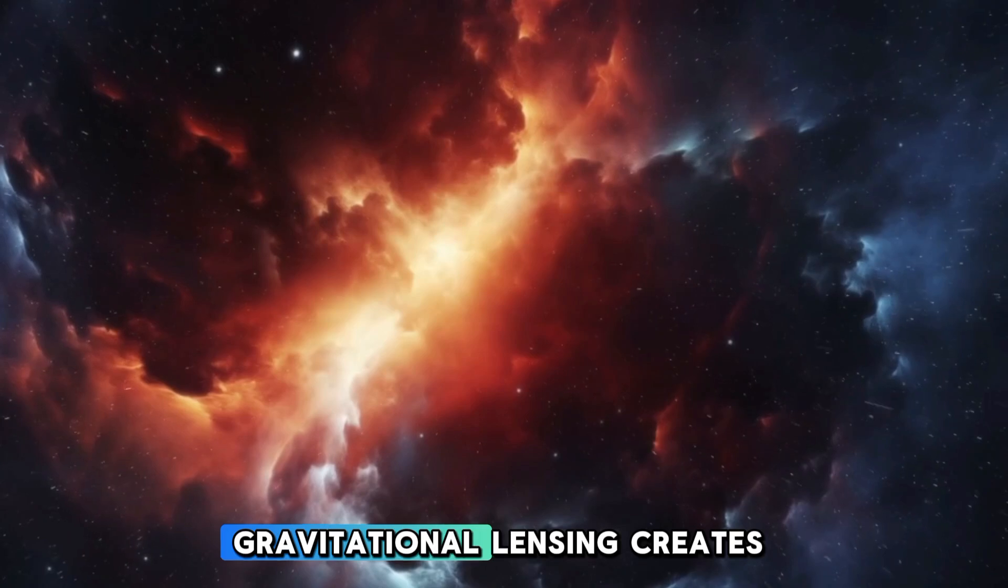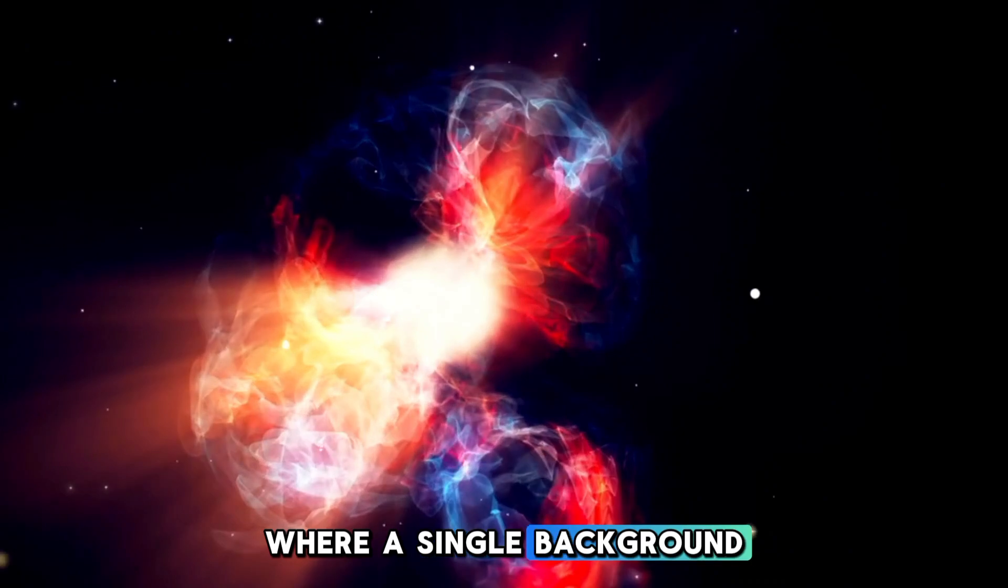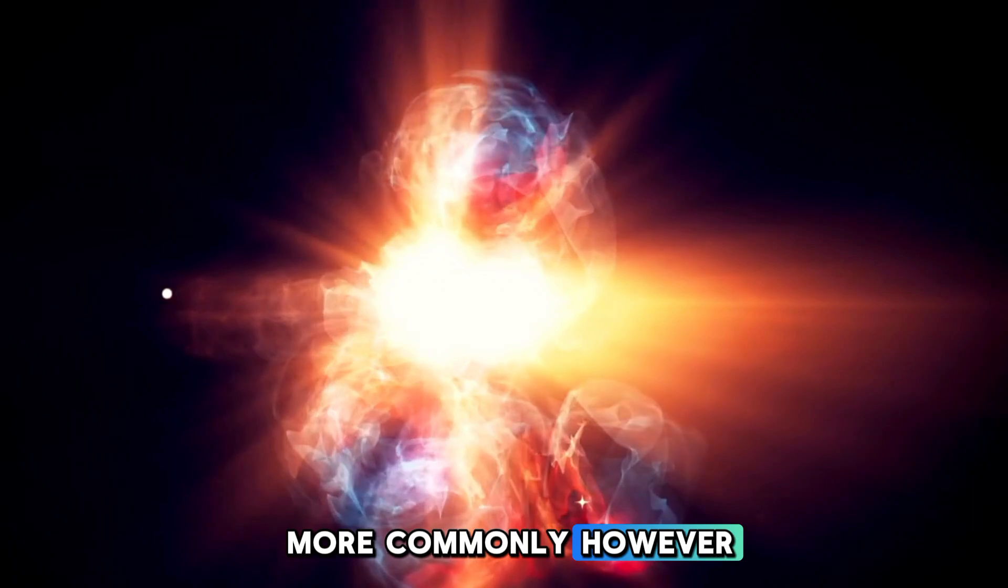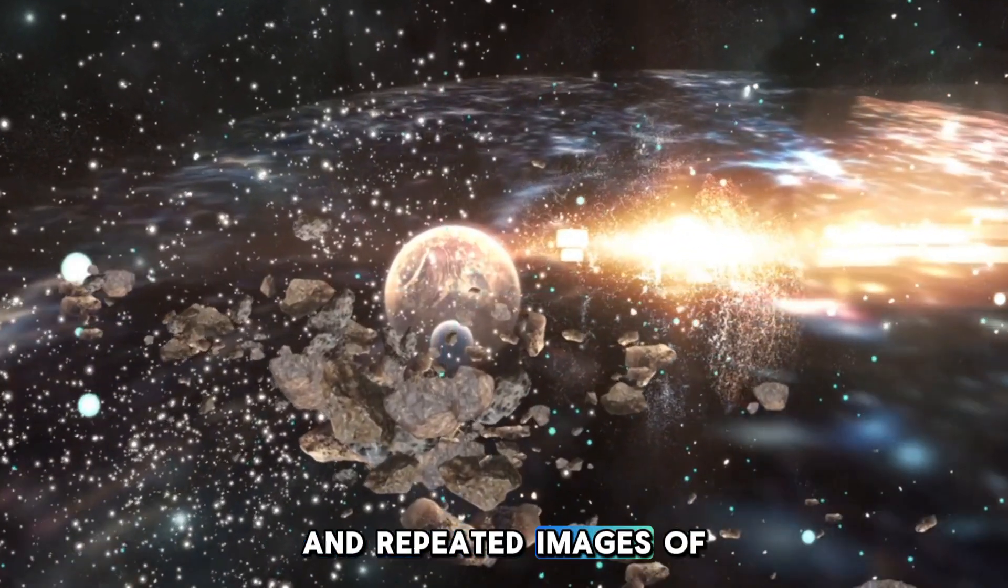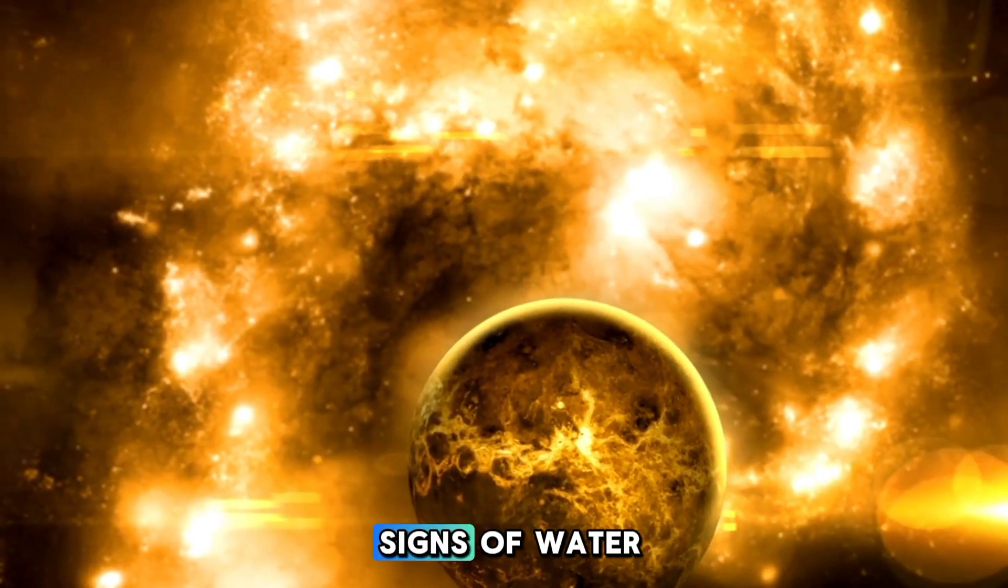In some cases, gravitational lensing creates perfectly symmetrical Einstein rings, where a single background object appears as a glowing circle. More commonly, however, the effect results in elongated arcs and repeated images of the same galaxy.